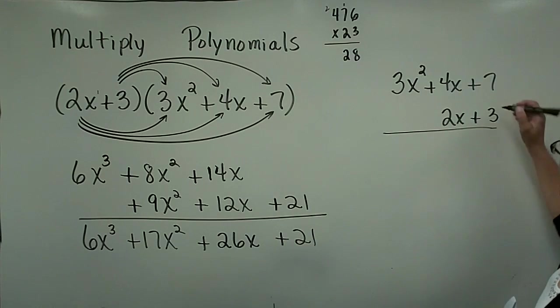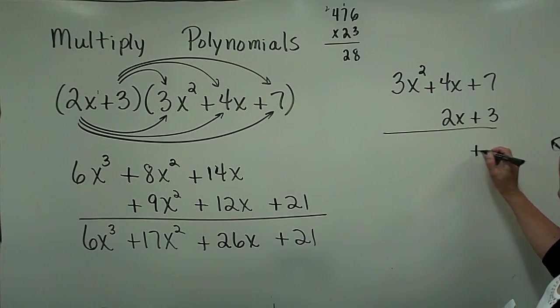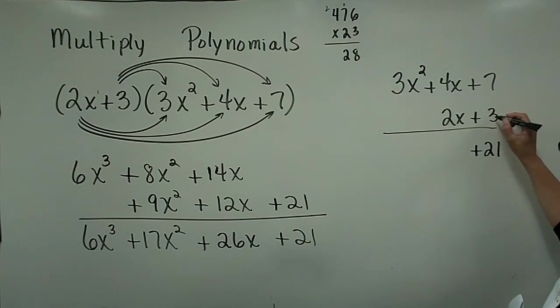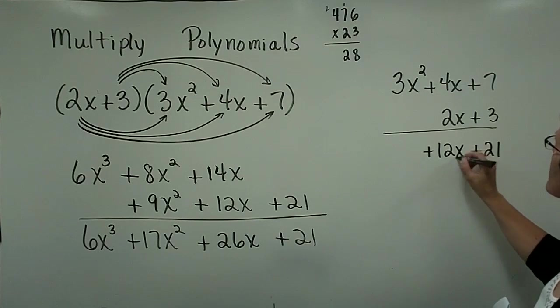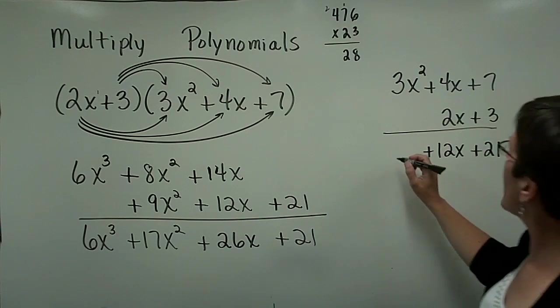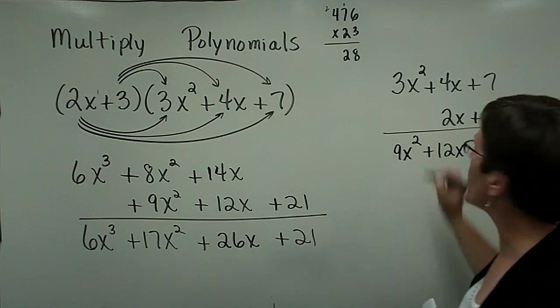And so I'm going to take the 3 times the 7 and write down a positive 21. The 3 times the 4x and write down a 12x. And 3 times 3x squared is 9x squared.